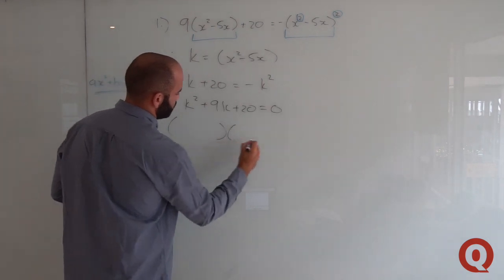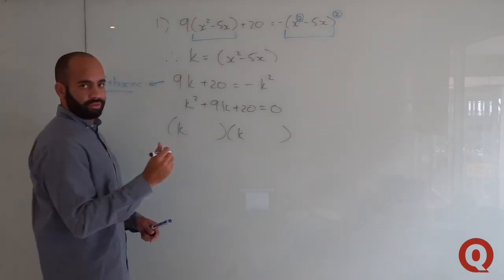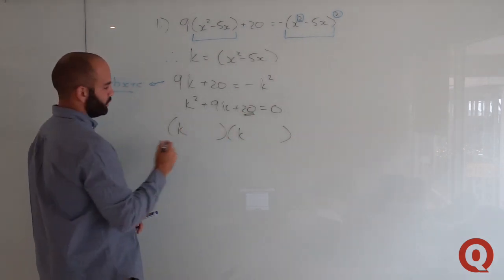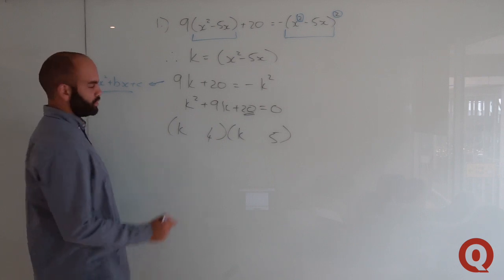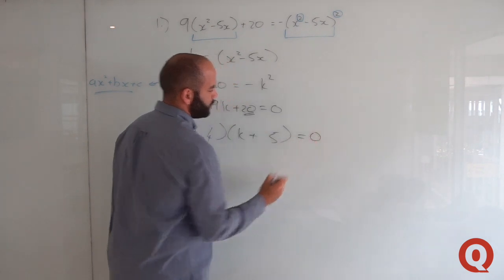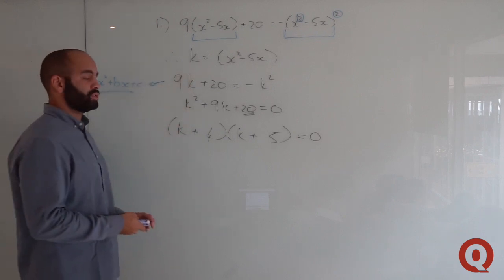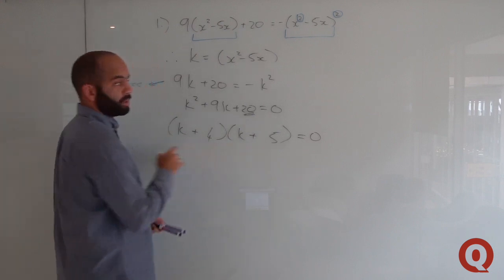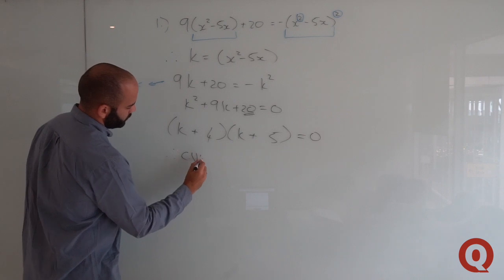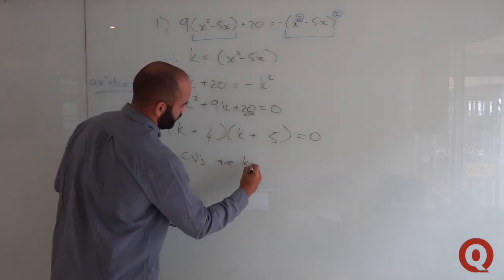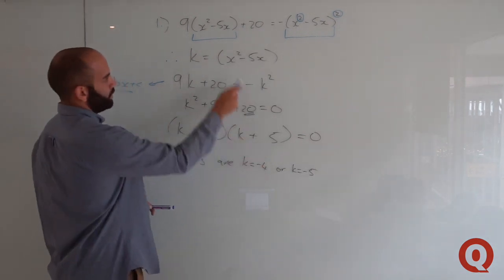Factorizing k²+9k+20 = 0, we get two brackets: (k+4)(k+5) = 0. We can use 5 and 4 to multiply to get the constant term, and since the sign is positive, both terms will be adding — so both signs are plus. This gives us the critical values k = −4 or k = −5.